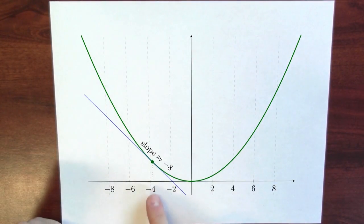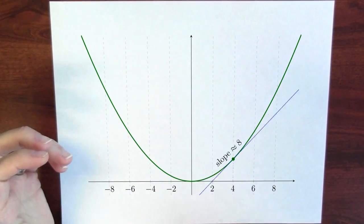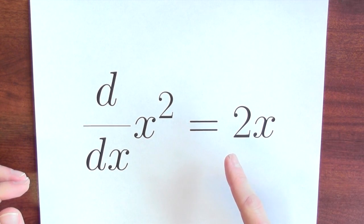What that limit is really calculating is the slope of a tangent line at the point x. This is the graph of y equals x squared. At x = -4, the slope of the tangent line is -8. At x = 2, the slope is 4. And at x = 6, the slope is 12. We've approached the derivative of x squared numerically, algebraically, geometrically, via the limit definition, and through tangent line slopes. No matter how you slice it, the derivative of x squared with respect to x is 2 times x.